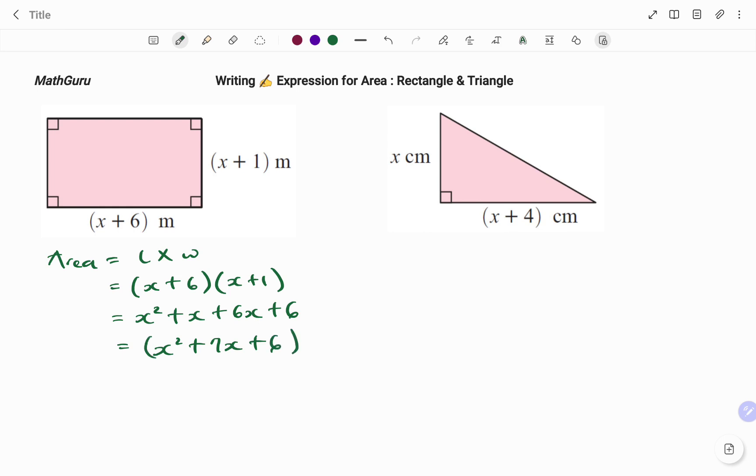In the second example, I have a triangle. The perpendicular height has been given, so the area or the formula for the area of a triangle is half times your base times your perpendicular height.